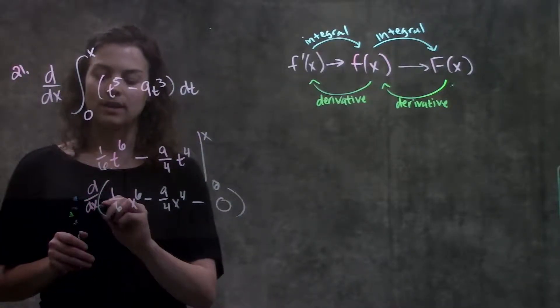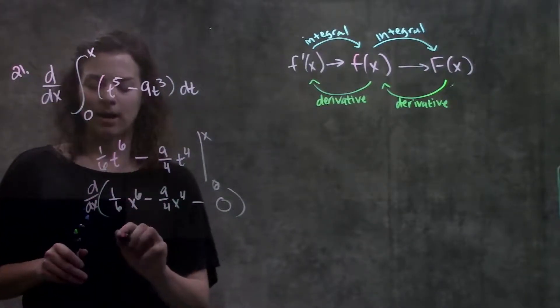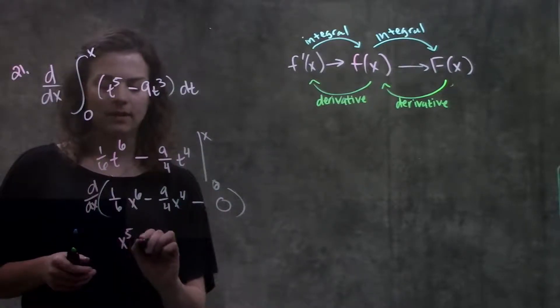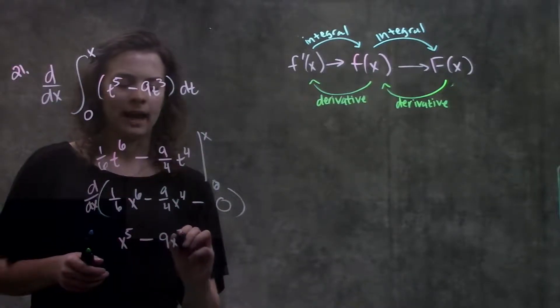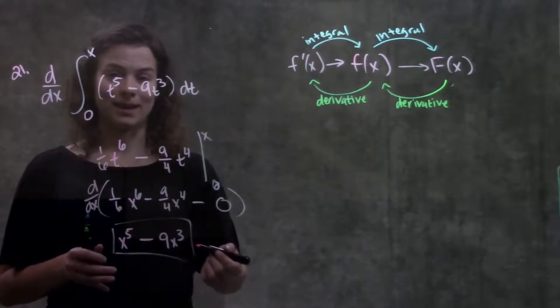When I take the derivative of this whole thing, I get, using my power rule, that this is x to the fifth minus 9 x cubed. And that's my answer.